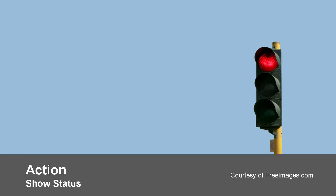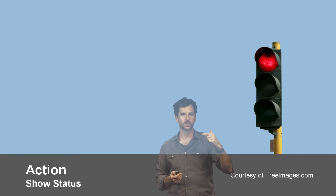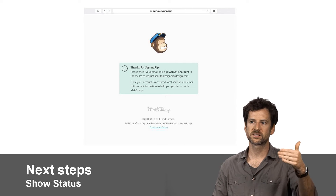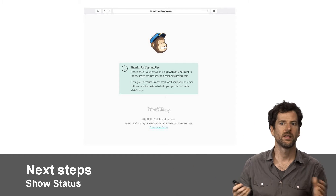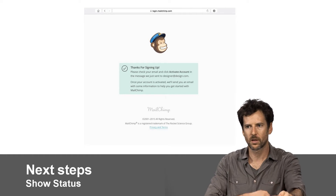Traffic lights are a classic example of showing state, and they do so usefully by having a redundant code — the red light is both red and at the top, which helps when color is hard to see due to lighting or for colorblind users. The way feedback connects to action is that it's nice to show, after you've done something, where you are and what the next step might be. So you sign up for a mailing list and it doesn't just say 'great, you've signed up' — it says 'you've signed up, and now the next thing you can do is this.' That helps move people along in the process because they often don't know what to do next.